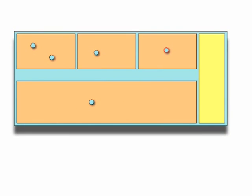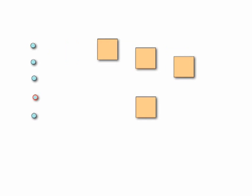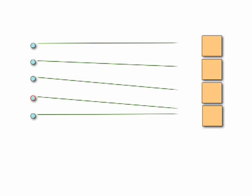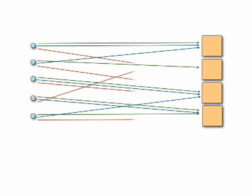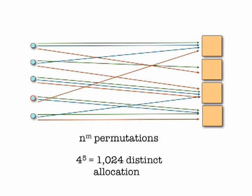Going back to our simple example, we can imagine an allocation as a mapping of consumers to space. There are many possible mappings. In fact, for this simple problem there are about a thousand distinct allocations. We could easily calculate each of these, throw out the ones that don't meet our constraints, and pick the remaining one that has the lowest composite metric.